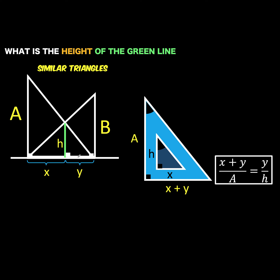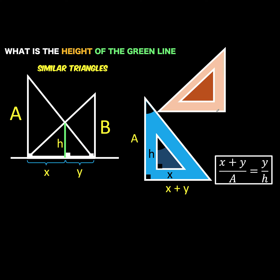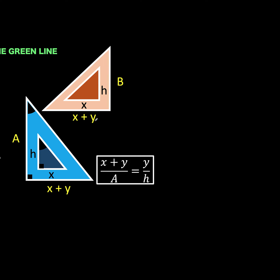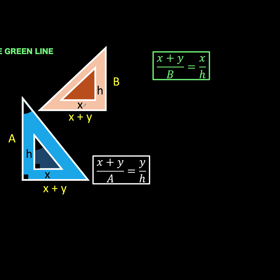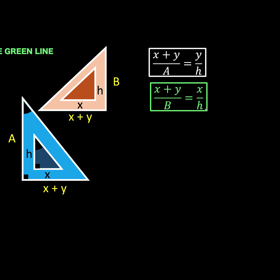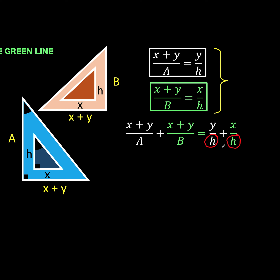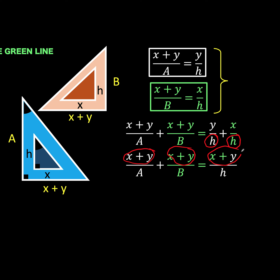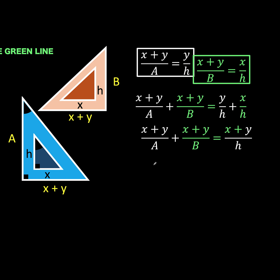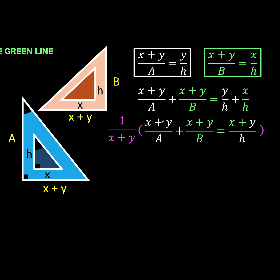Next, let's go back to this figure and highlight two more similar triangles. Let's detach these two similar triangles and form the proportions. We have (x + y) over b equal to x over h for the smaller triangle. So we have two equations to solve simultaneously. Adding the left sides equal to the right sides, notice that we have the same denominator, so we can add the numerators to arrive at (x + y) on the right side. Notice also that x + y appears three times, so if we multiply both sides of the equation by 1 over (x + y), we arrive at 1 over a plus 1 over b equals 1 over h.